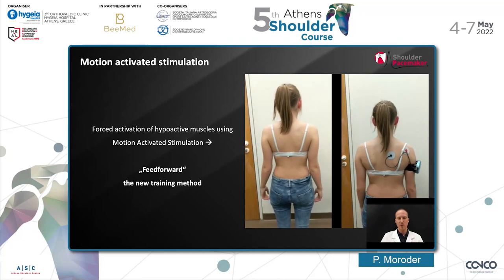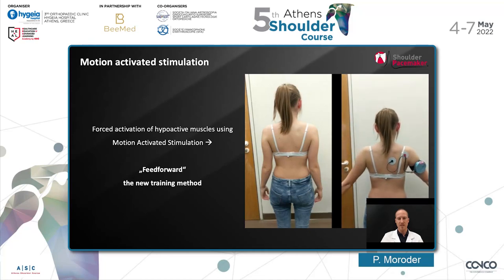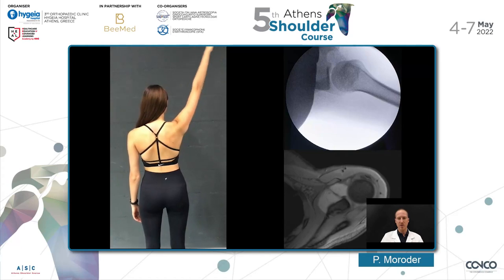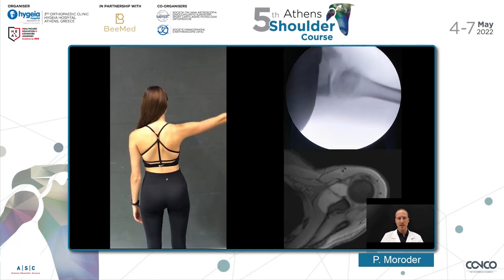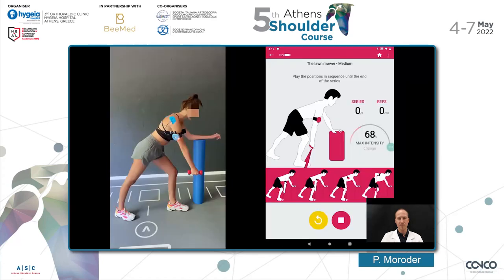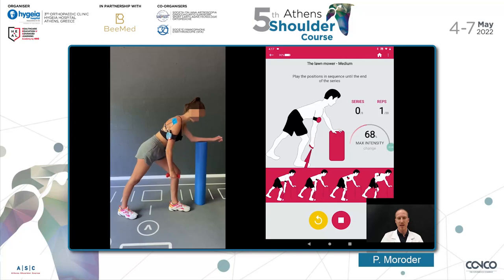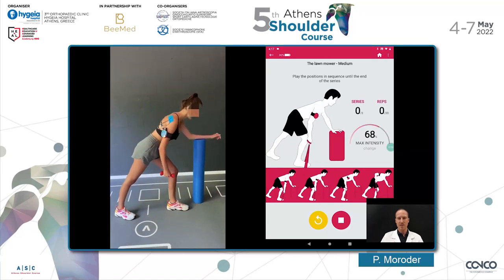We call this treatment a feed-forward treatment, as it is teaching the patient how to activate the previously hypoactive muscles. Coming back to the example of the young girl who has a severe type of functional posterior shoulder instability, I would like to share some treatment slides. You can see how this patient performs regular physiotherapeutic exercises, and while she does so, the shoulder pacemaker activates her hypoactive muscle groups, and you can follow this progress on an app.